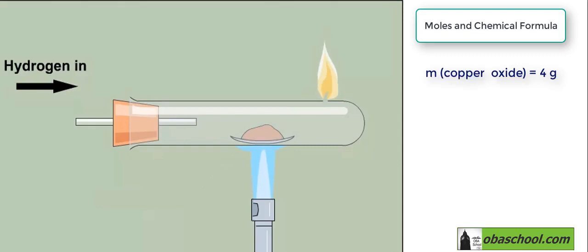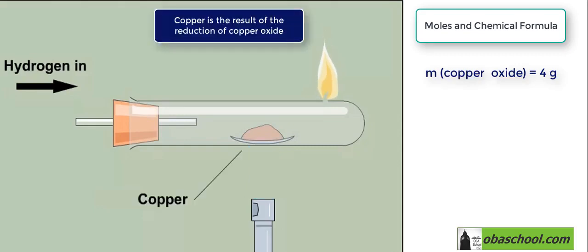We heated the black copper oxide, and therefore it turned into copper. This is the reduction of the copper oxide.